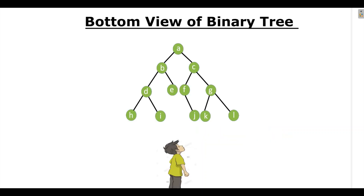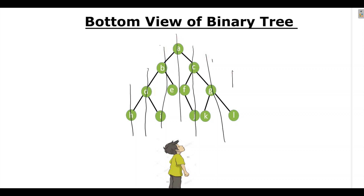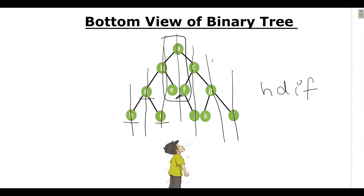First we should know what is bottom view of binary tree. Let's take an example: if a boy is standing at the bottom of a binary tree, what are the nodes which he can see? If I draw vertical lines for easy understanding, then he can see H, D, I. This is the zero level vertically. Among A, E, F — F will be the last node. Among C, J, K — K will be the last node. Then G and then L. This is the part covered in vertical order traversal.